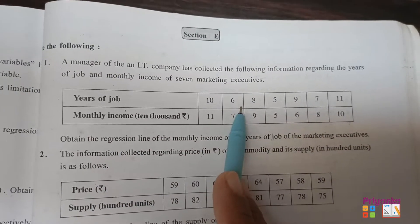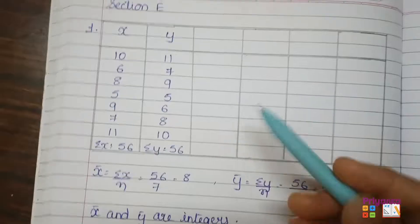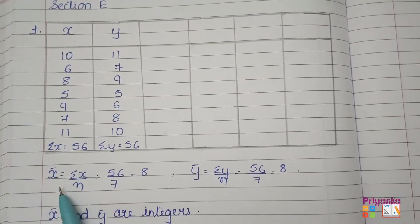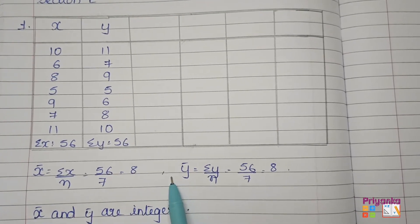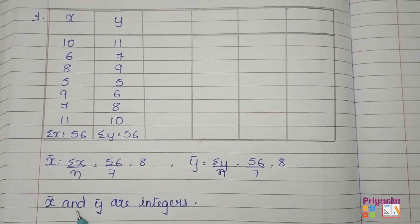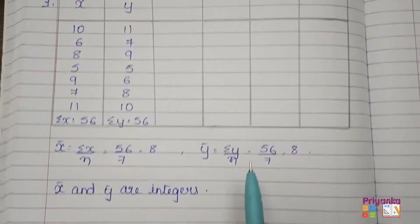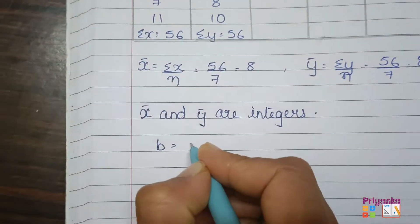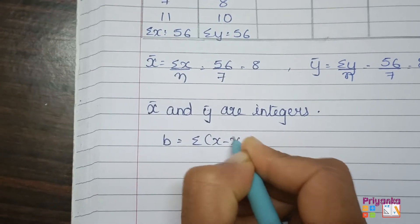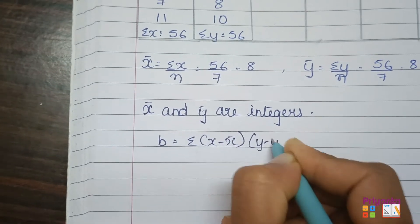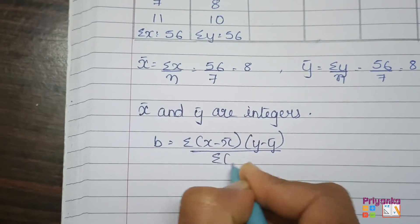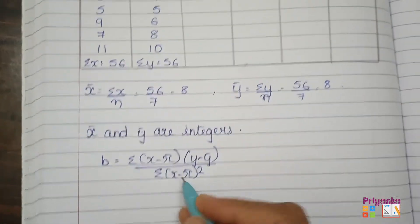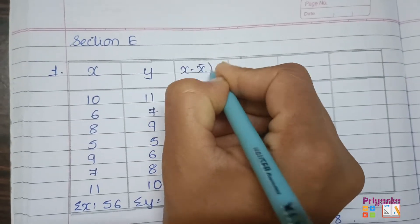First, take the information in the table with columns x and y. The totals of x and y have been found, and x̄ and ȳ have been calculated. Since x̄ and ȳ are integers, the formula for b is: σ(x − x̄)(y − ȳ) divided by σ(x − x̄)². For this we need the columns x − x̄ and y − ȳ.